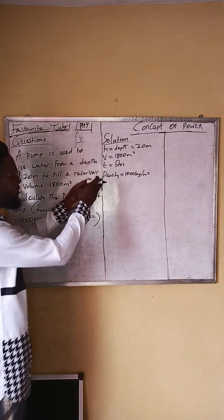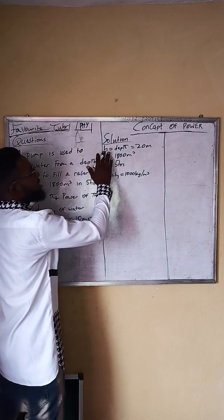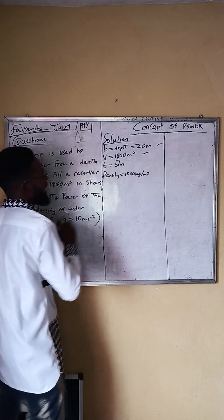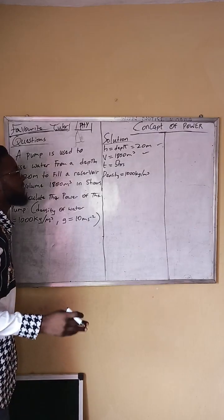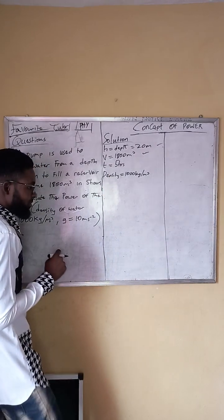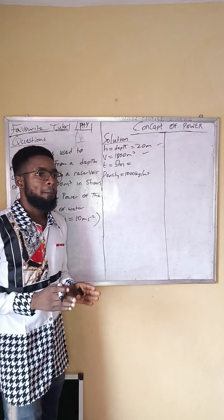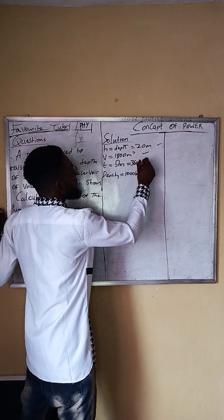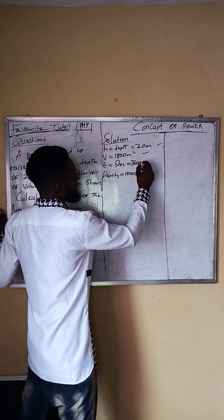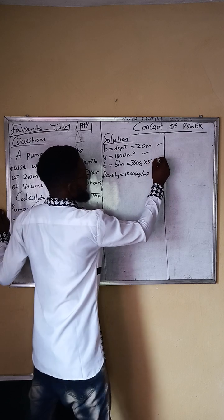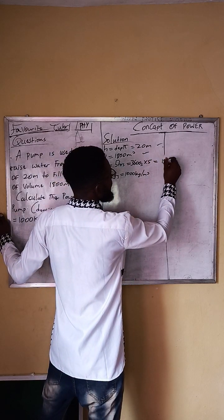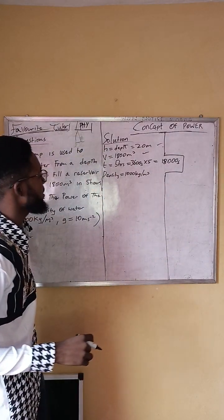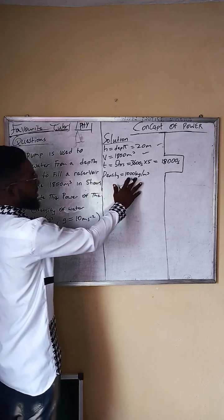Now we check if the parameters are in their respective units. The unit of height is meters — correct. The unit of volume is meter cube — correct. The unit of time is seconds, but we have five hours, so we need to convert. One hour equals 3600 seconds, therefore five hours equals 3600 times 5, which equals 18,000 seconds. The density of water is 1000 kilograms per meter cube.